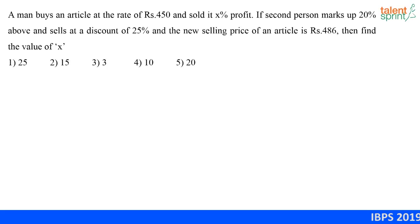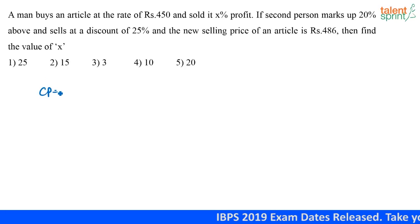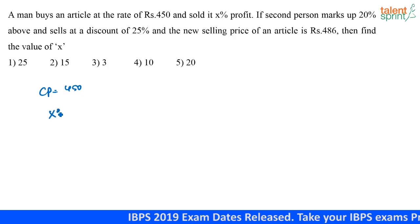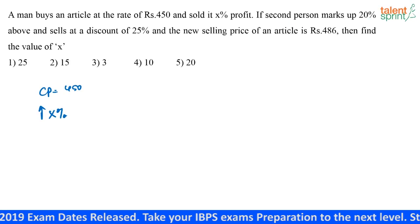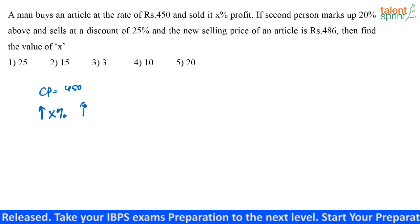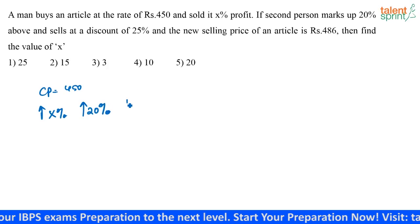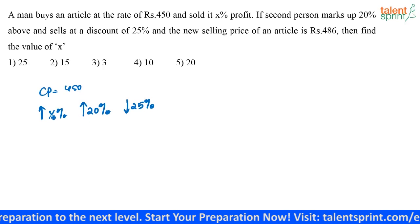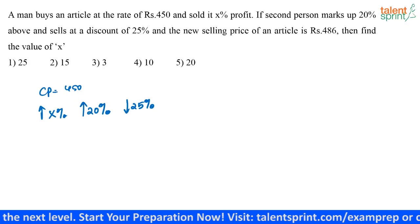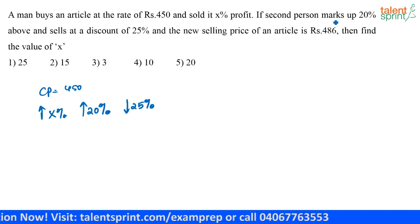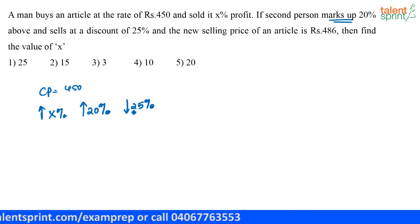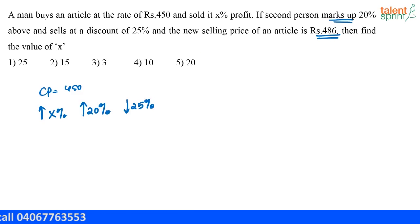A man buys an article at rupees 450 and sells it at x percentage profit, so the cost price is 450. A second person then marks it up by 20 percentage above that price and sells at a discount of 25 percentage. The new final selling price of the article is 486. You have to find the value of x.